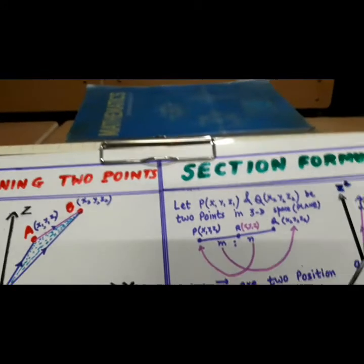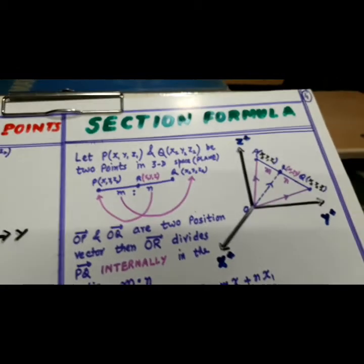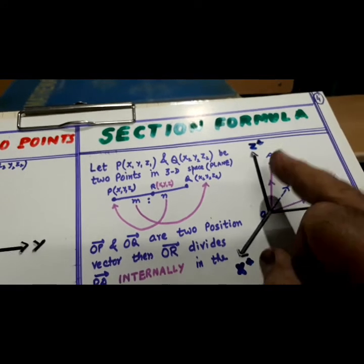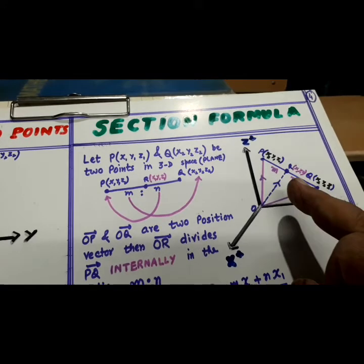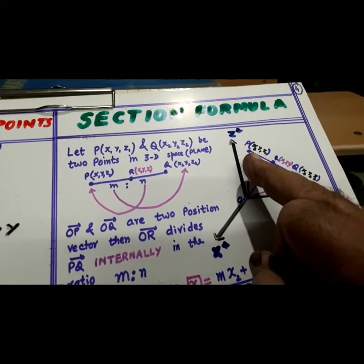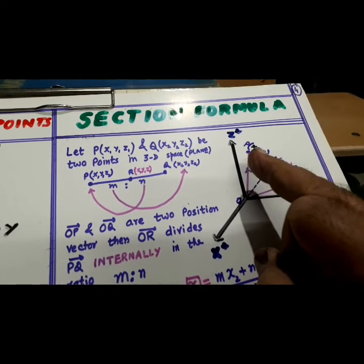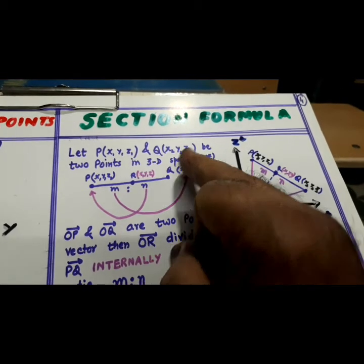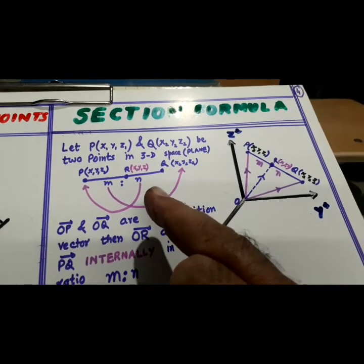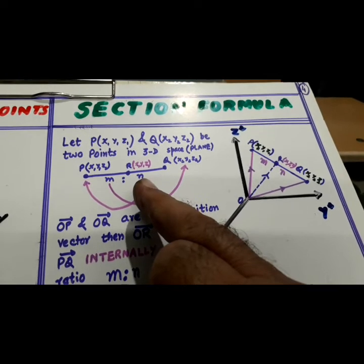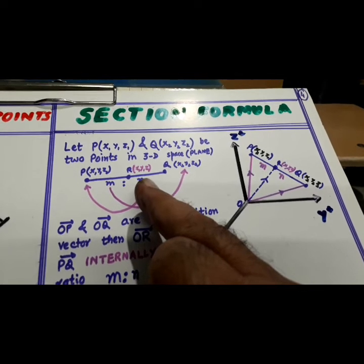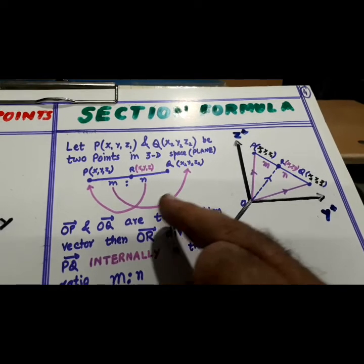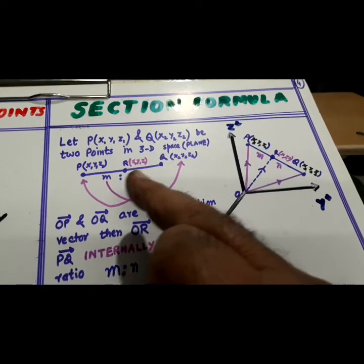Now, let us learn how to apply the section formula. Two points will be given to you and we have to find two points, say P is there, X1, Y2, Z2. These are two points. Then, we have to find the coordinates of R, X, Y, Z.